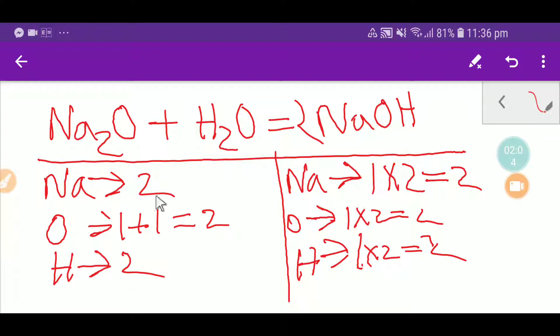So our sodium is balanced, our oxygen 2-2 is balanced, our hydrogen 2-2 is balanced. So everything is balanced. You can say that this is a balanced equation. Let me show you the second way to balance this equation.